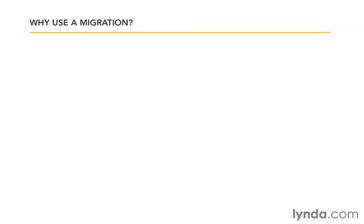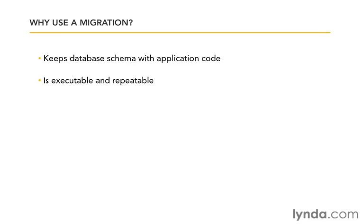Why use a migration? Well, it keeps our database schema with our application code. Our application depends on the database being a certain way, so since they're so closely coupled together, we want to make sure that the description of the database is stored right alongside our application code. It's also because it's written down — these instructions are there, we can execute them anytime we need to, and they're repeatable.